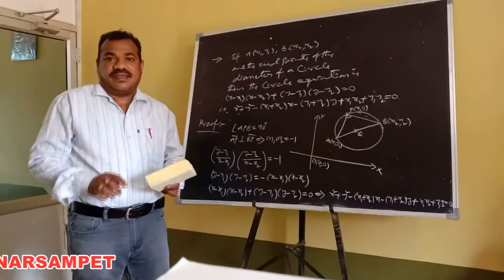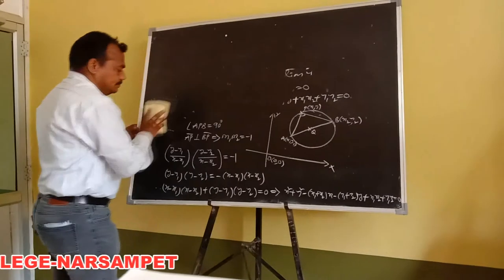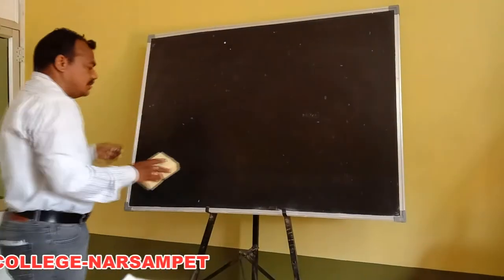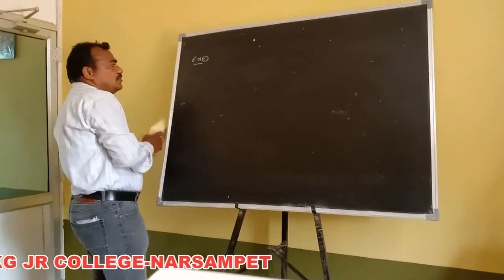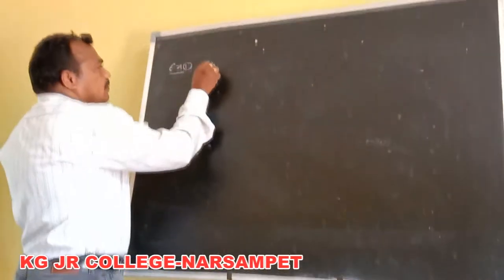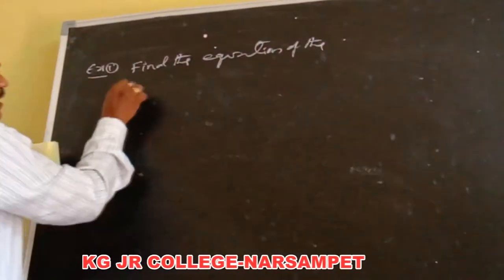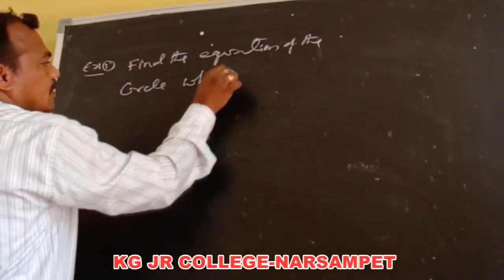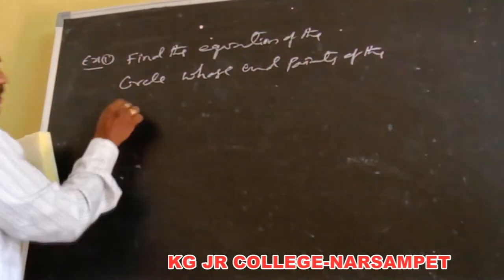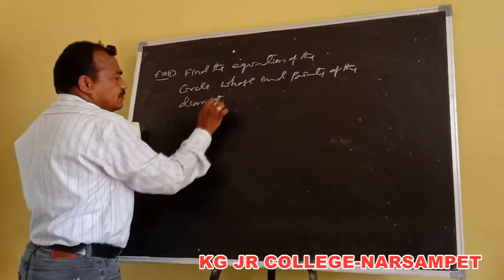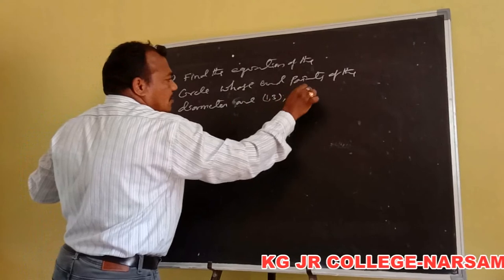Students, next I am explaining one example of this model. Example: Find the equation of the circle whose endpoints of the diameter are (1, 3) and (2, 5).